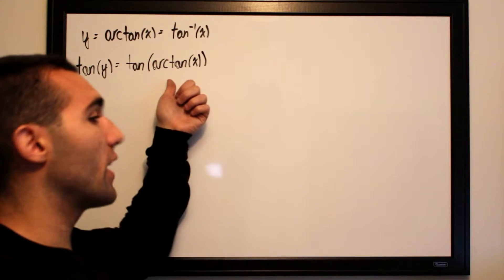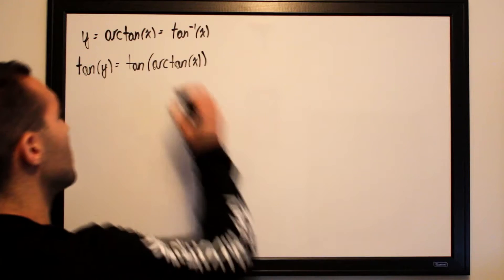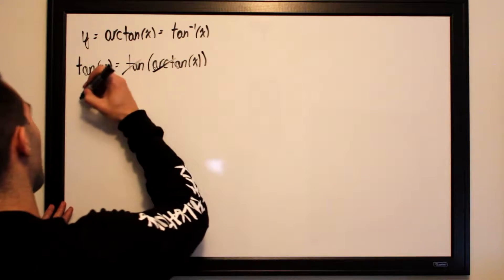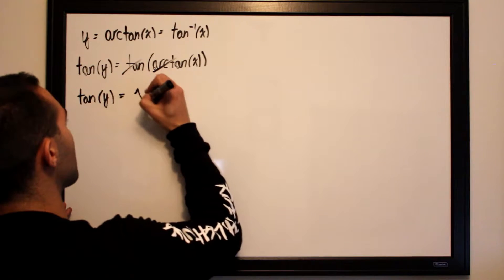So tangent of y equals the tangent of arctangent of x. Now the tangent and the arctangent are going to cancel each other out, so all we'll have left on this side is x. So tangent of y is actually equal to x.